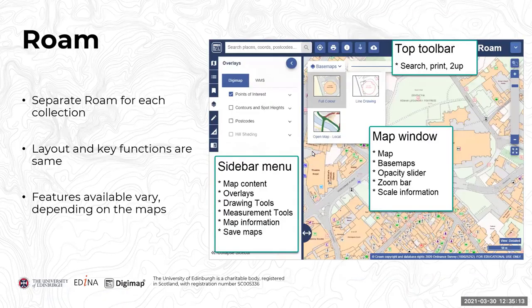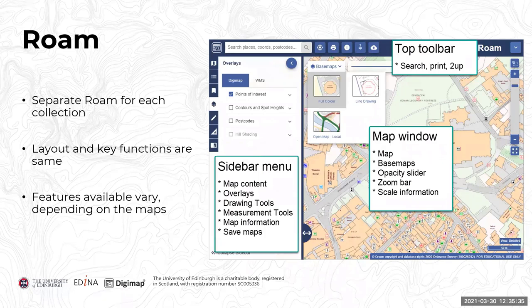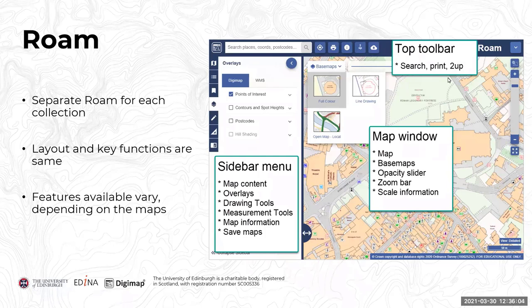I'll spend most of the time talking about Roam today as it's an introductory session. There's a separate Roam for each Digimap collection — apart from our LiDAR terrain data, which is purely a data download facility. The layout and key functions in each Roam are the same, but features may vary depending on the maps provided. For example, features appropriate for Ordnance Survey maps may not be appropriate for our marine maps.